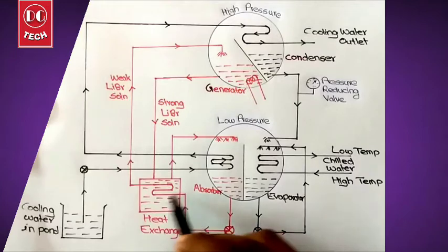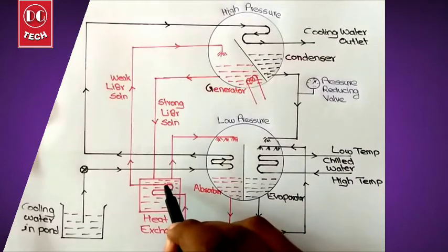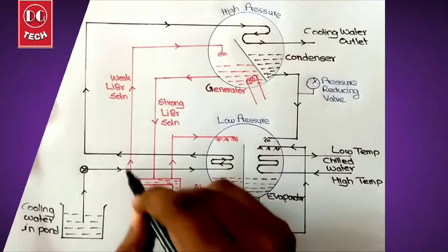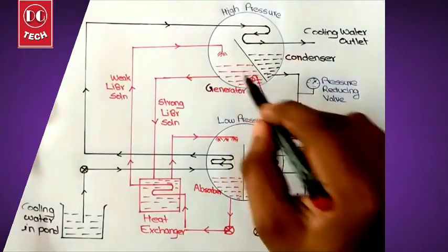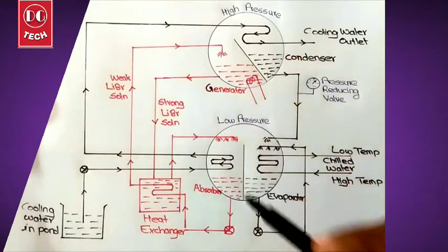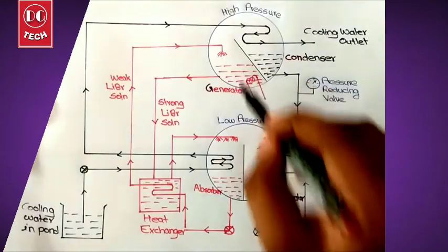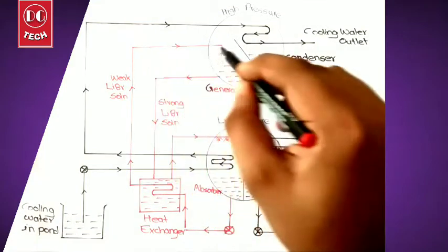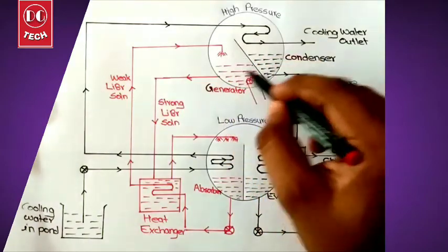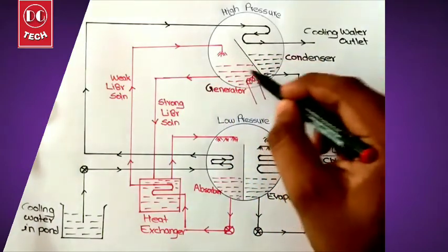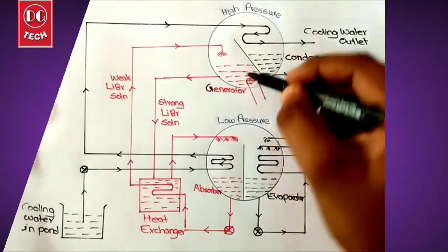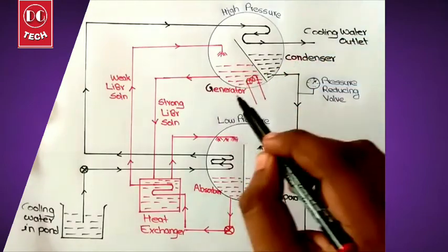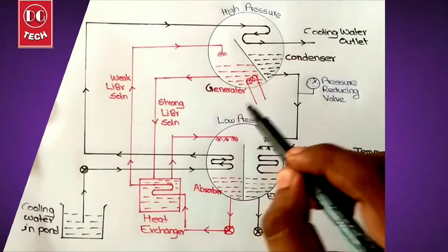The weak lithium bromide flows through the heat exchanger, absorbs heat from it, and moves towards the generator. In the generator, a coil is used to increase the temperature of this solution. The weak lithium bromide is sprinkled and the generator increases its temperature.